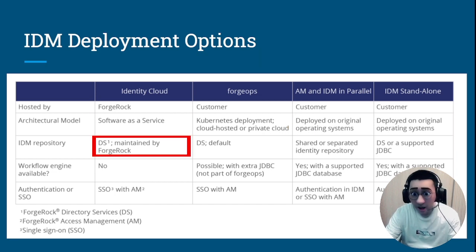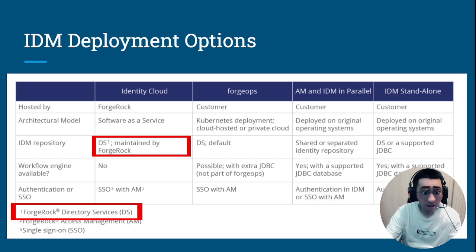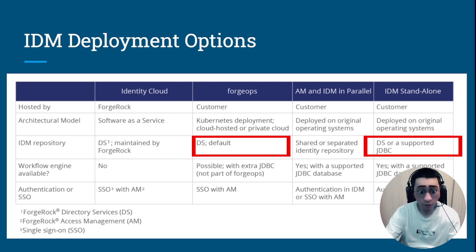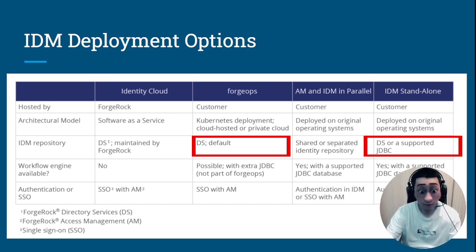From an IDM repository perspective, ForgeWalk uses the directory service. When you see DS in the sharing, we are talking about the ForgeWalk directory service or LDAP technology maintained by ForgeWalk. If you are using ForgeOps, the default is using DS as the IDM repository. As a standalone IDM, you can actually use a relational database as an IDM repository, and you can do the same in ForgeOps, but it might take a little extra work to configure.